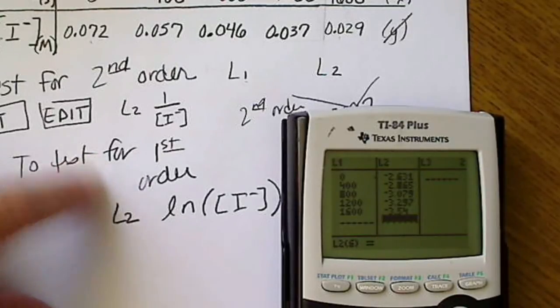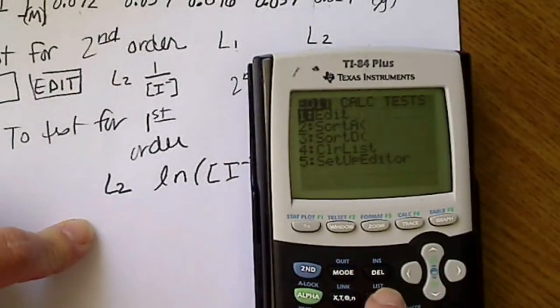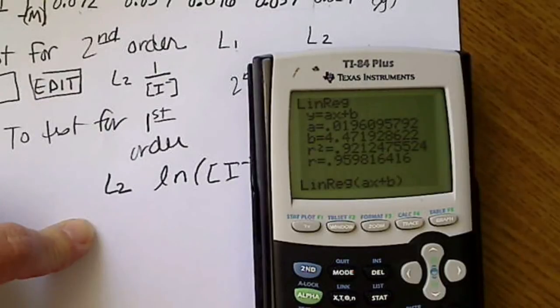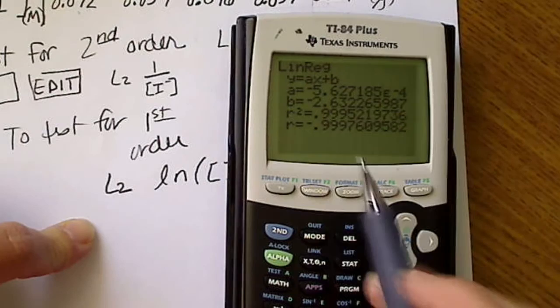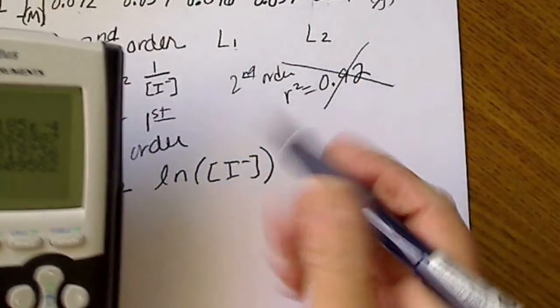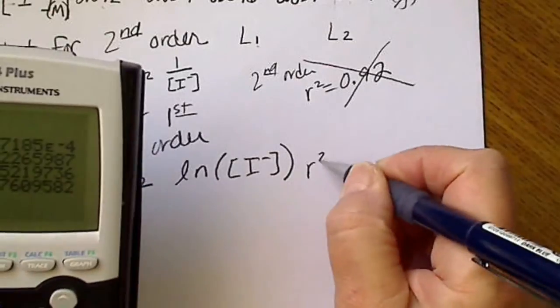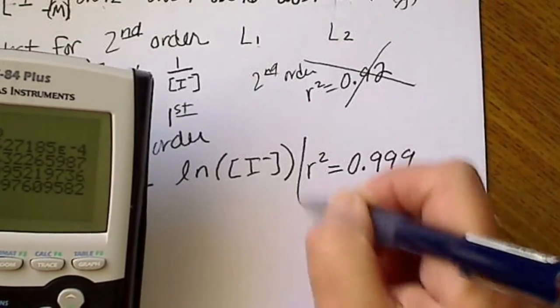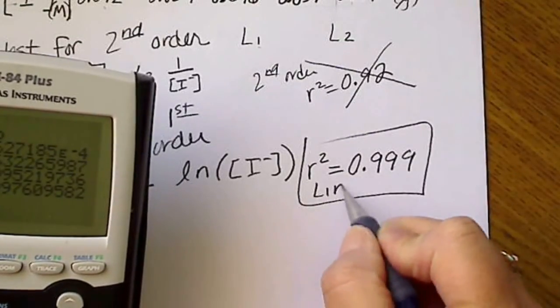Now I'm going to go back to the stat key and calculate a linear equation. And when I do that, I get an r squared value of 0.999. So that tells me that this is a first-order equation. So that means that this is linear.